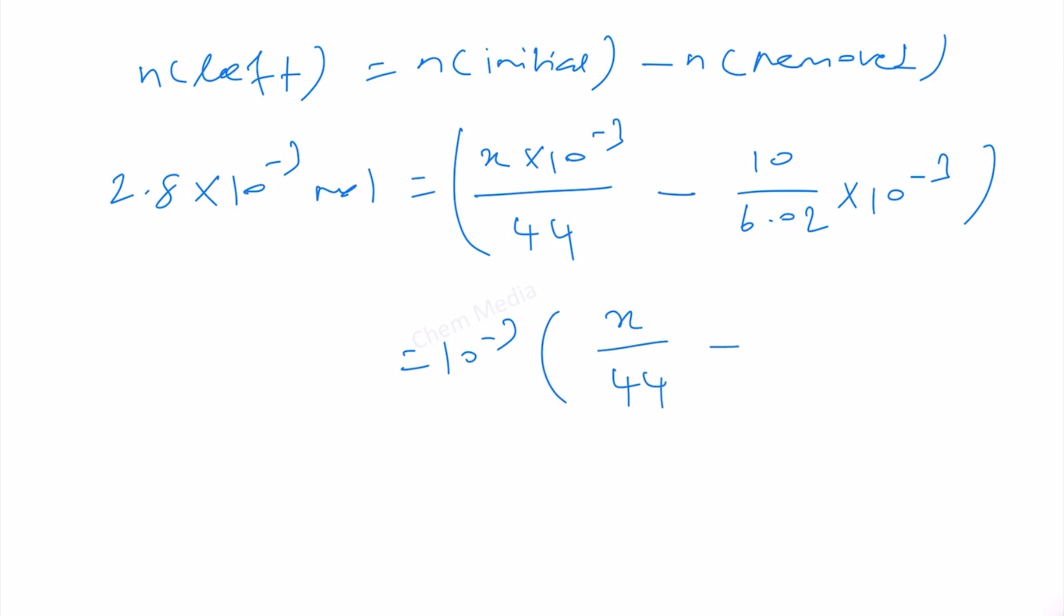Number of moles left equals number of moles initially available minus number of moles removed. The number of moles left is 2.8 times 10 to the power minus 3 mole. Initially available is x times 10 to the power minus 3 divided by 44 minus 10 divided by 6.02 times 10 to the power minus 3. Let us take out 10 to the power minus 3 that is common. Therefore, x divided by 44 minus 10 by 6.02, which we can write as 1.66, and we can cancel the 10 to the power minus 3.